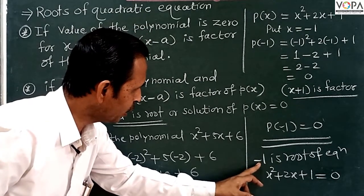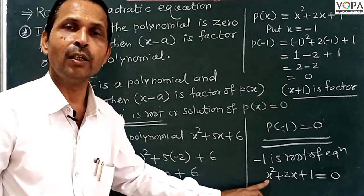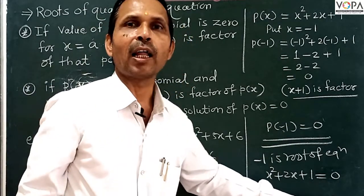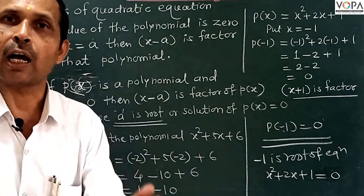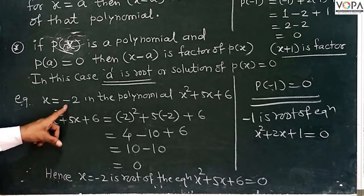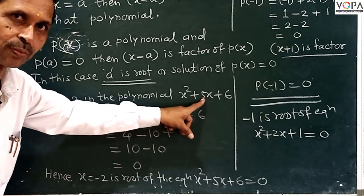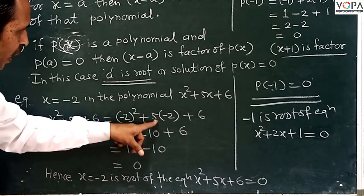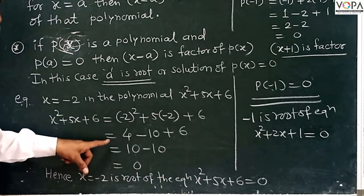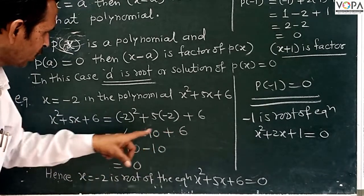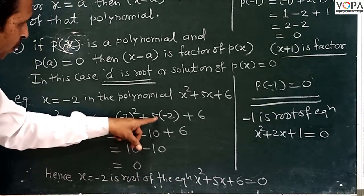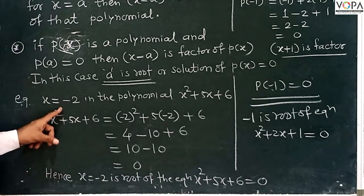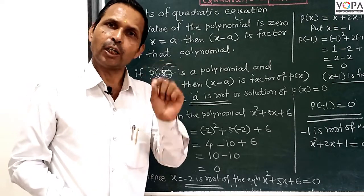If we put x equal to minus 1 in the LHS of this equation, we will get LHS equal to RHS. Now if we put x equal to minus 2 in the polynomial x squared plus 5x plus 6: minus 2 squared plus 5 times minus 2 plus 6 equals 4 minus 10 plus 6, which equals 0. The value of the equation is equal to 0.